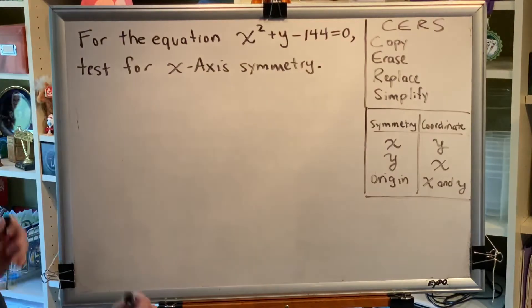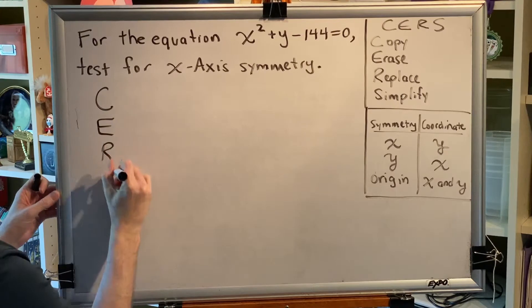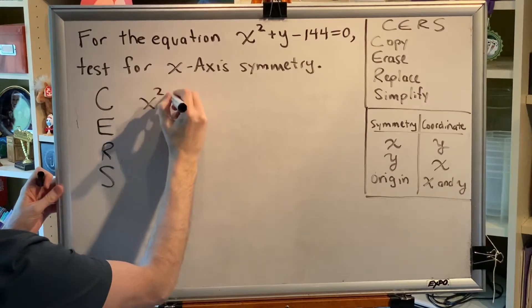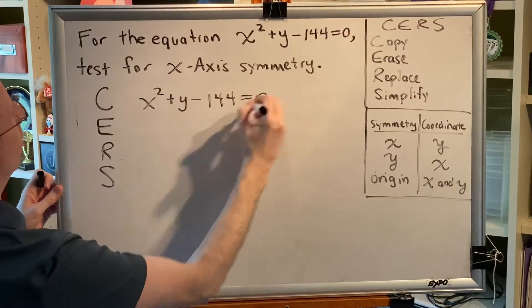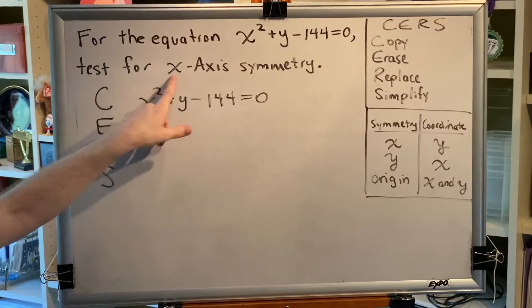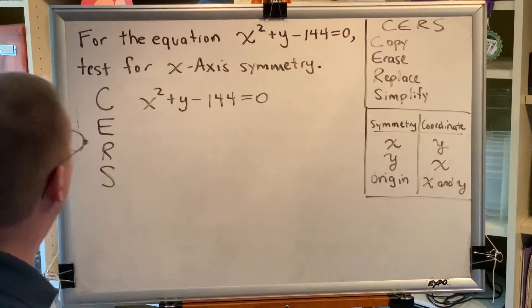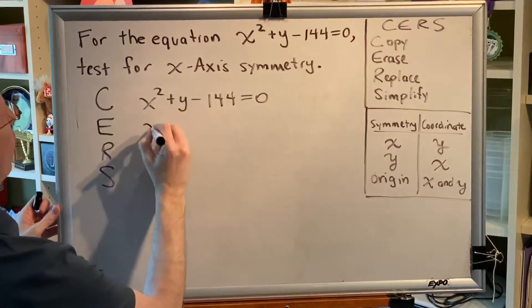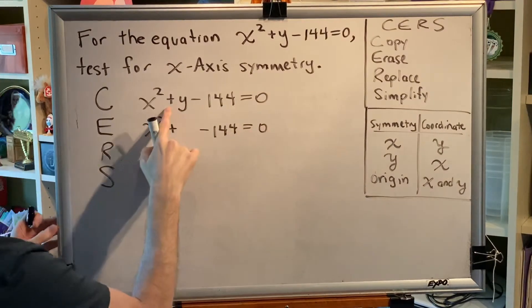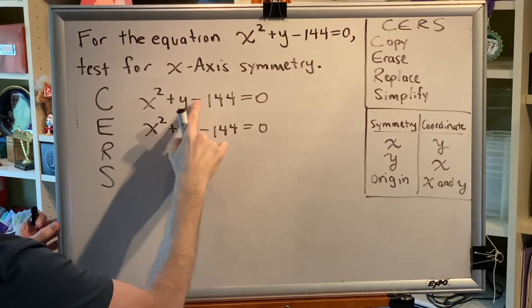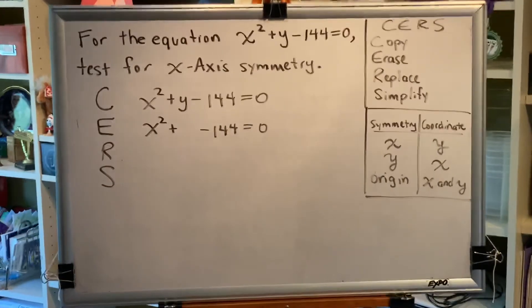We're testing an equation for symmetry, so we'll use CERS. C for copy — create an identical copy of your equation with no changes. Next, erase. We know we're testing for x-axis symmetry, so y needs to change to its opposite. Erase every y in the equation — not anything before, after, or above the y. Only erase the y symbol itself.